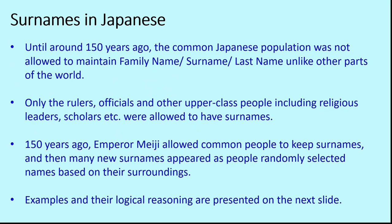Once he did that, many new surnames appeared because there was no rule for people to think of their surnames. So they randomly selected names based on their surroundings, their professions, and the places where they lived. In the next slide, we will see some examples of such surnames and the logical reasoning or meaning behind those surnames.